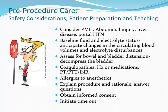Before going any further, remember your standards of procedural safety and complete your pre-procedure care. Consider past medical history, especially abdominal injury, liver disease, and portal hypertension. Have a working knowledge of your patient's fluid and electrolyte status and anticipate changes such as reduction of circulating blood volumes and electrolyte disturbances. Assess for bowel and bladder distension, and decompress the bladder before the procedure. Do they have a coagulopathy, and do they need to take any steps to mitigate bleeding risks? Think of allergies. Be sure to check with your patient and family and explain the procedure. Check to make sure the proceduralist is credentialed to perform the intervention. Finally, be sure consent is signed and initiate and document a timeout before the procedure gets underway.